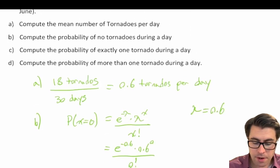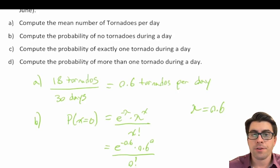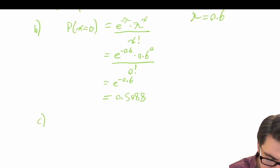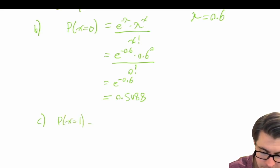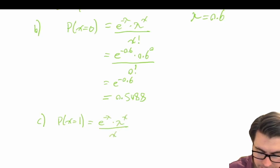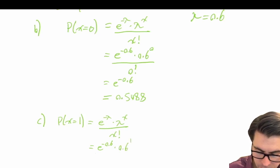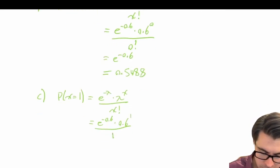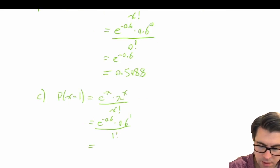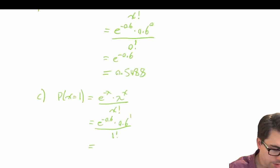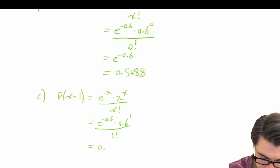For question C, we compute the probability of exactly one tornado during a day. Lambda remains 0.6, so the probability that X equals 1 is: e to the power of negative 0.6, times 0.6 to the power of 1, divided by 1 factorial. That gives us 0.3293 rounded to four decimal places.